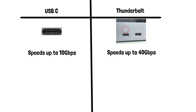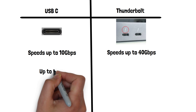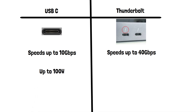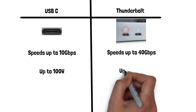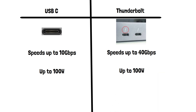Next, let's compare power delivery capabilities. USB-C supports power delivery and can deliver up to 100 watts of power, making it suitable for laptops and other power-hungry devices. Like USB-C, Thunderbolt also supports power delivery, allowing for the same 100 watts.